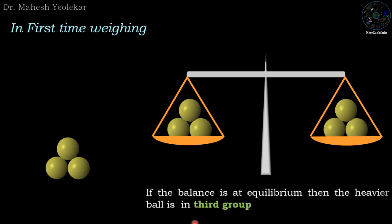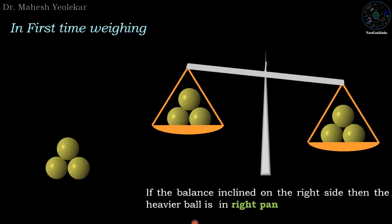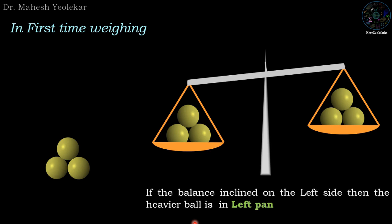If the balance is at equilibrium then the heavier ball is in the third group. If the balance inclined on the right side then the heavier ball is in the right pan. If the balance inclined on the left side then the heavier ball is in the left pan.